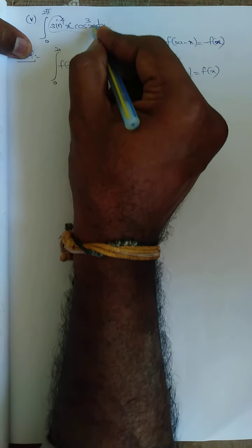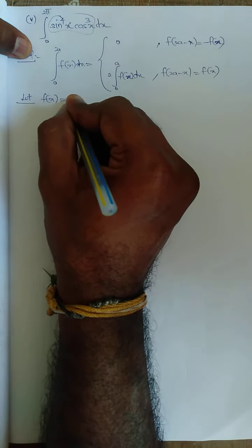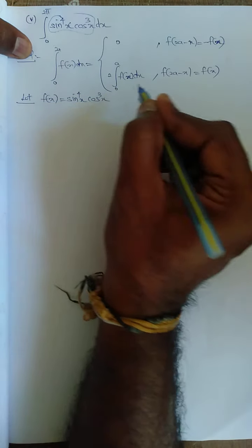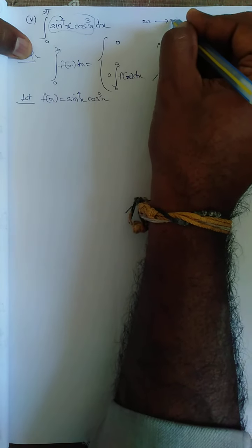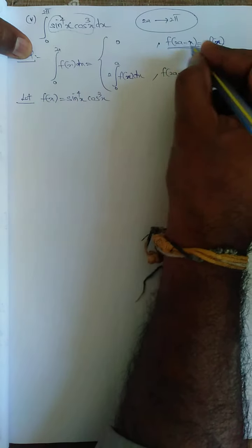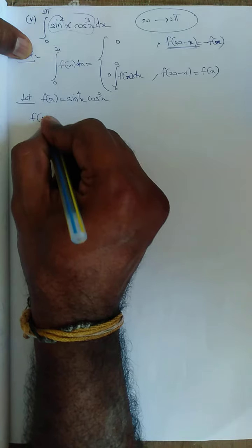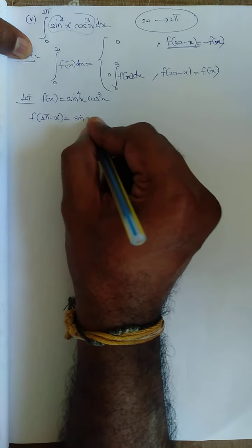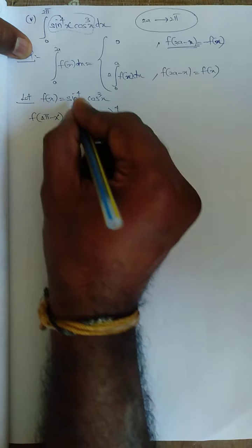First, let f(x) = sin⁴x · cos³x. We apply 2a - x here. Since 2a = 2π, we compute f(2π - x): sin(2π - x) to the power 4, and cos(2π - x) to the power 4. Note that 2π - x lies in the fourth quadrant, where sine is negative — so sin(2π - x) = -sin x, raised to power 4.